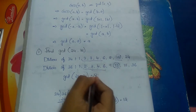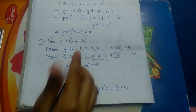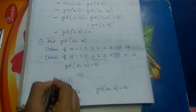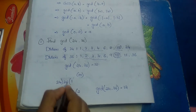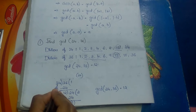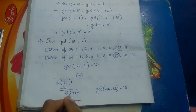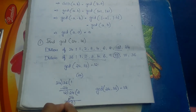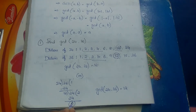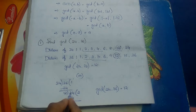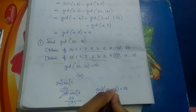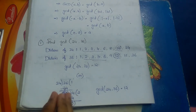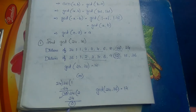The second method uses repeated division. Divide 36 by 24: 24 × 1 = 24, remainder 12. Now divide 24 by 12: 12 × 2 = 24, remainder 0. Since the remainder is 0, the divisor 12 is the GCD. Therefore gcd(24, 36) = 12. This process continues until the remainder becomes 0.